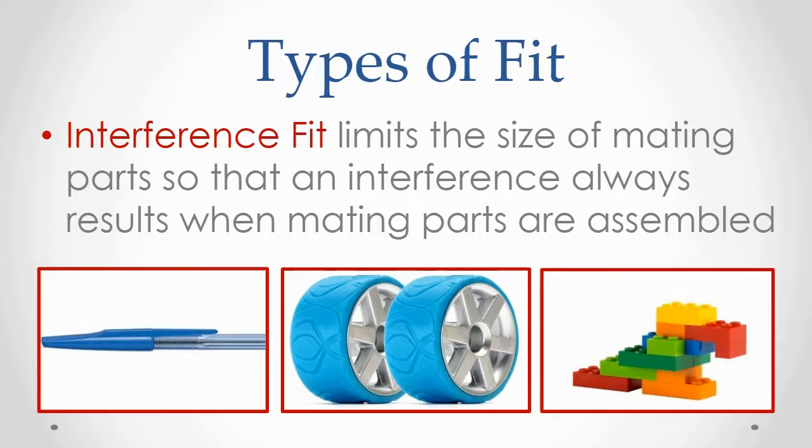Such as the cap on a pen, the rubber tire stretched around the plastic wheel, or the toy bricks that snap together. For these products to function, there must always be interference between the parts.